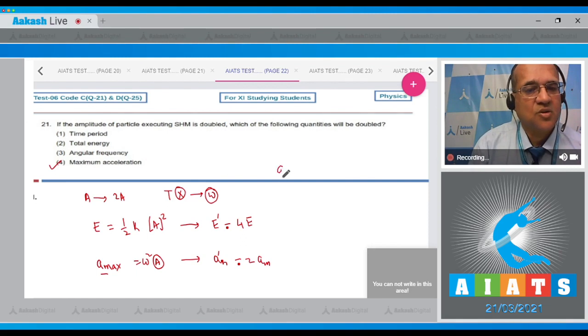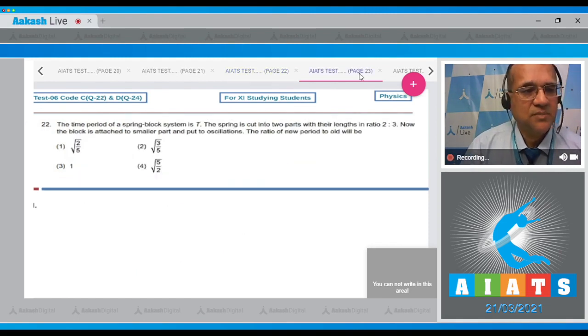So answer is option number 4. Question number 22: The time period of spring-block system is T. The spring is cut into two parts with their lengths in the ratio 2 to 3. Now the block is attached to the smaller part and put to oscillation. The ratio of the new period to the old will be?